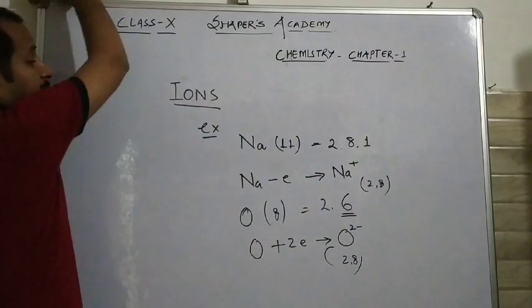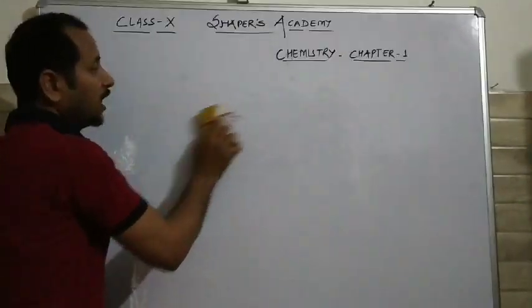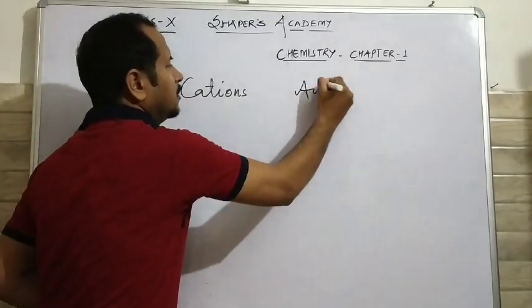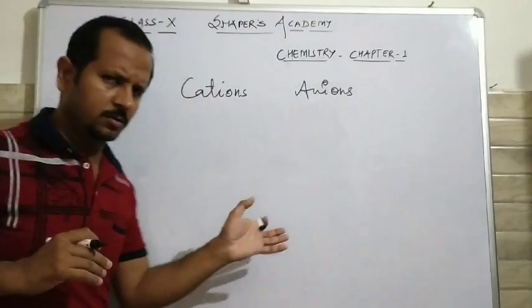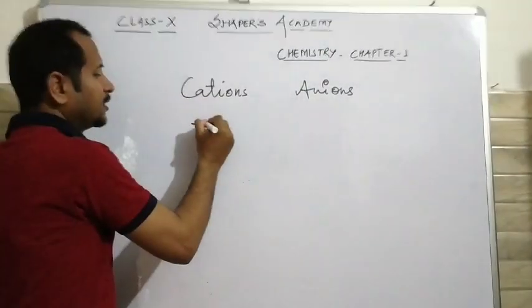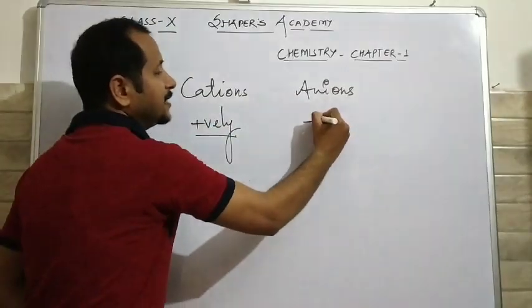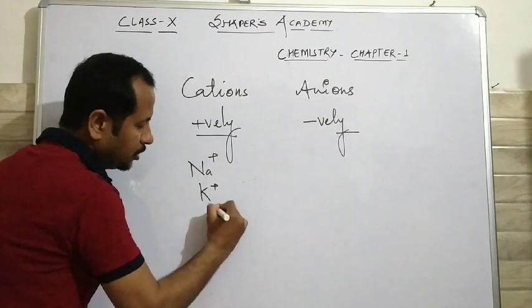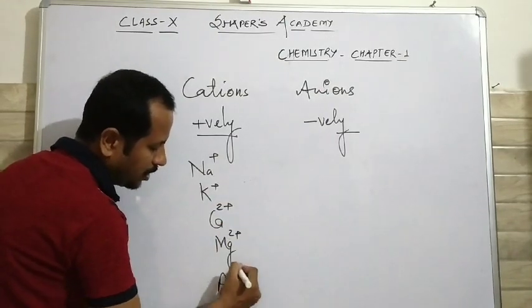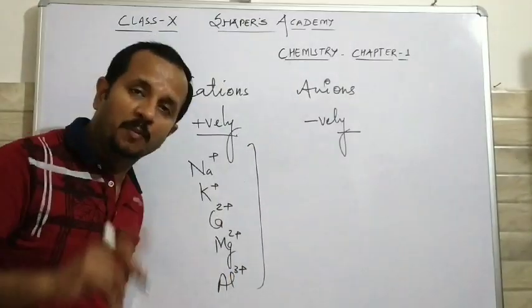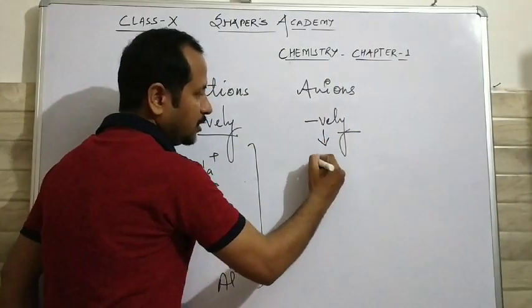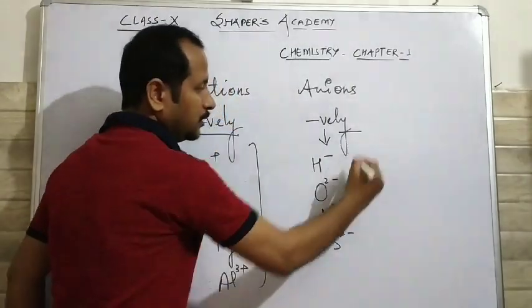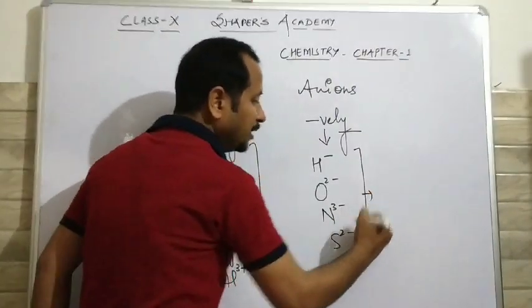You have studied that there are 2 types of ions: cations and anions. Cations are the positively charged ions and anions are negatively charged ions. For example, sodium, potassium, calcium, magnesium, aluminium — they all are positively charged ions formed by losing of electrons. Negatively charged ions include hydride ion, oxide ion, nitride ion, and sulfide ion — these are formed by gaining of electrons.